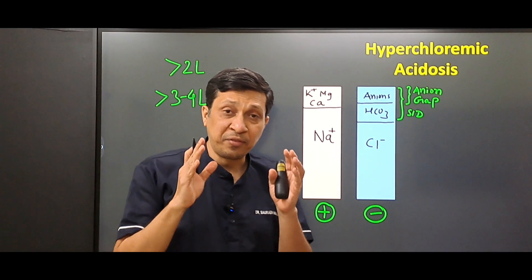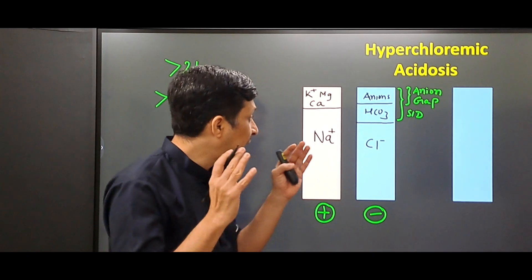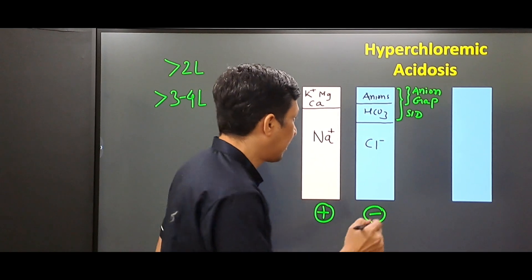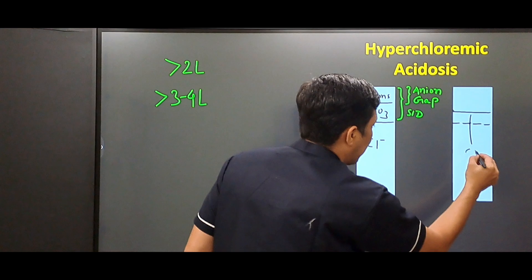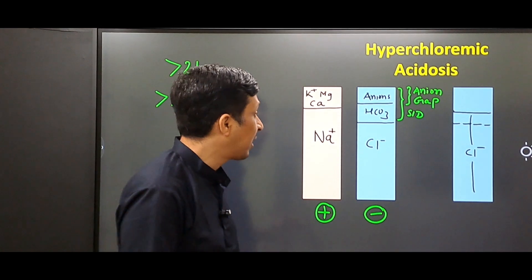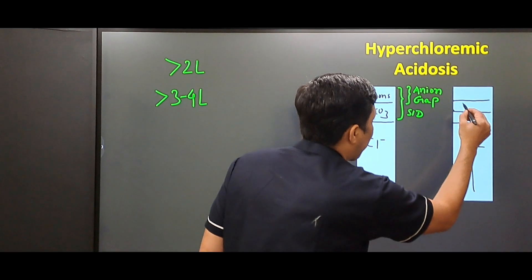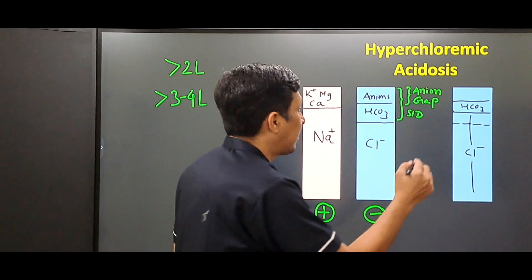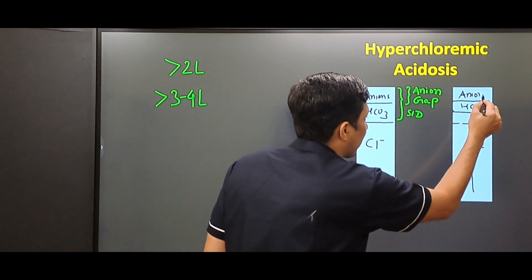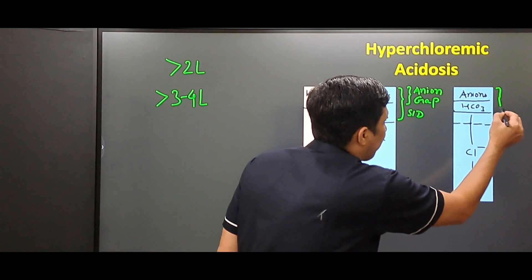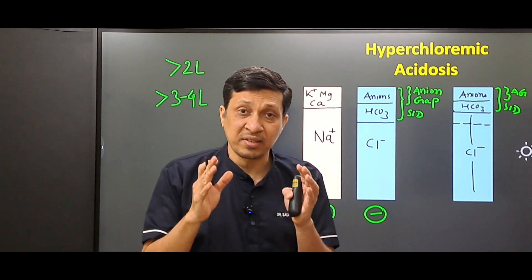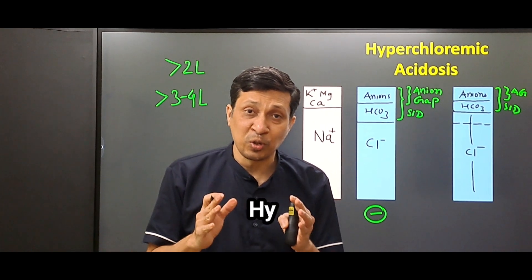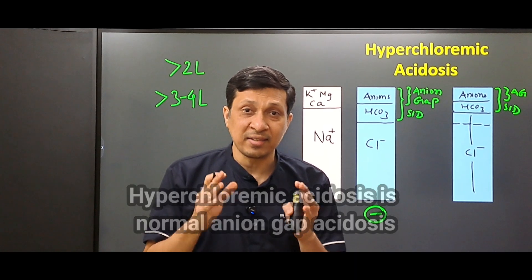When a large amount of normal saline is given, the chloride content in plasma increases. Due to the increased chloride content, the bicarbonate content in the plasma is reduced, while the unmeasured anions remain the same. As a result, the strong ion difference is reduced and the anion gap stays the same. According to Stewart's approach, if the strong ion difference is reduced it is called acidosis, and we also know that when bicarbonate content reduces, that is acidosis — this is hyperchloremic acidosis.